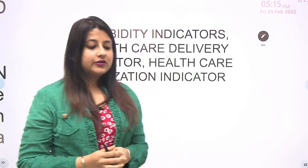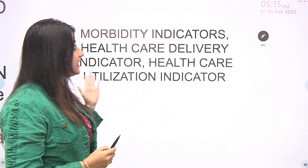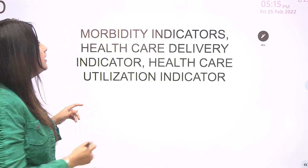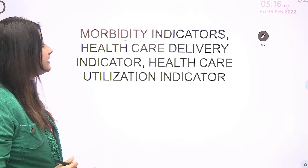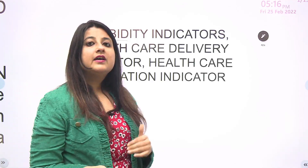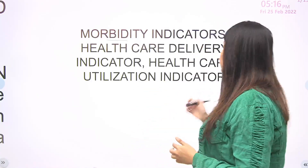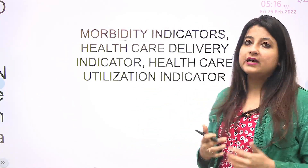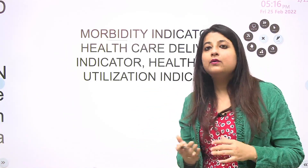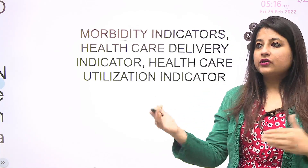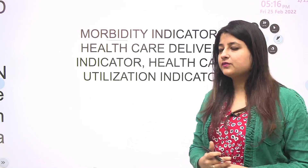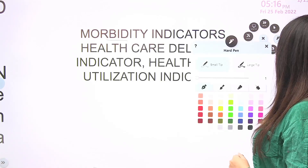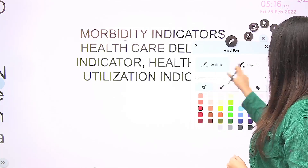Today we are going to discuss the second part of health indicators, where we are going to look at morbidity indicators, healthcare delivery indicators, and healthcare utilization indicators. Those who have missed the first video — which was on mortality indicators — can find the link in the description box of this video.